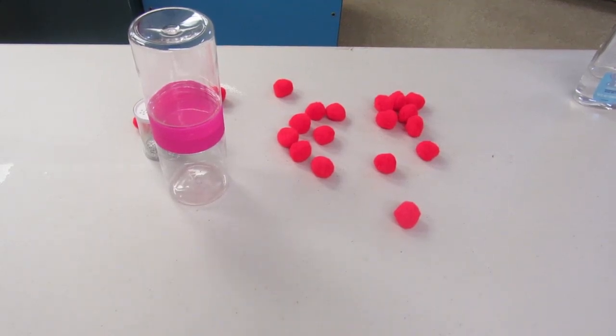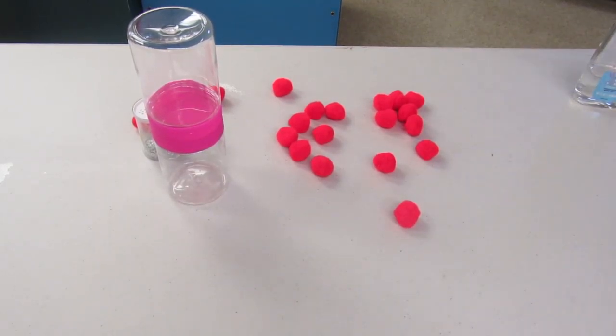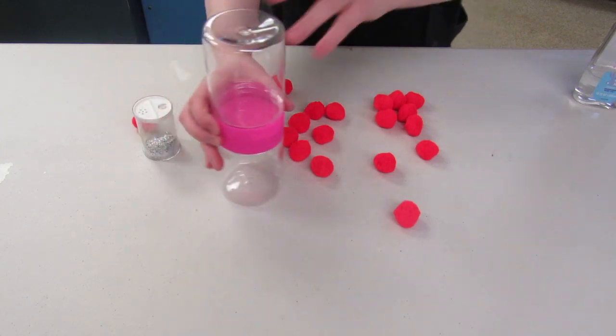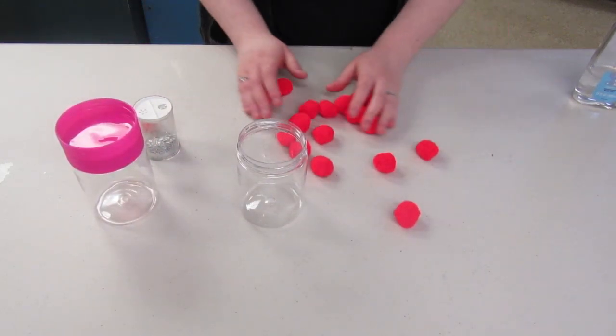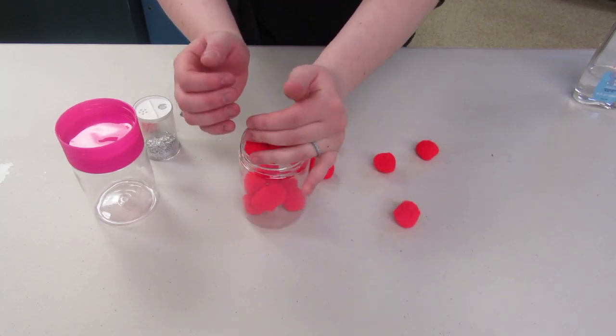Sensory bottles can be made with anything; it doesn't just have to be water beads. I'm going to make one sensory bottle that has pom-poms in it and another one that has glitter. Like with the water bead sensory bottle, add your items and then add your baby oil.